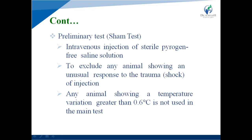Any animal showing a temperature variation greater than 0.6 degree centigrade is not used in the main test. In the preliminary test, the intravenous injection of sterile pyrogen-free saline solution is administered, and rabbits showing temperature variation greater than 0.6 degree centigrade are excluded from the main test.